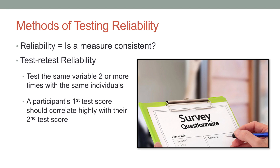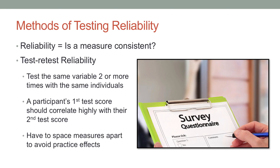In general, you want to make sure that participants' first score is highly correlated with their second, third, fourth, or however many other times they get scored. You also want to space apart all the times that you measure them so that they don't get what's called practice effects. For example, if you're measuring IQ, simply taking the IQ test over and over again can help people get better at it because they get practice at it, so you might want to space out testings a month apart so they don't improve simply by taking and retaking the test.